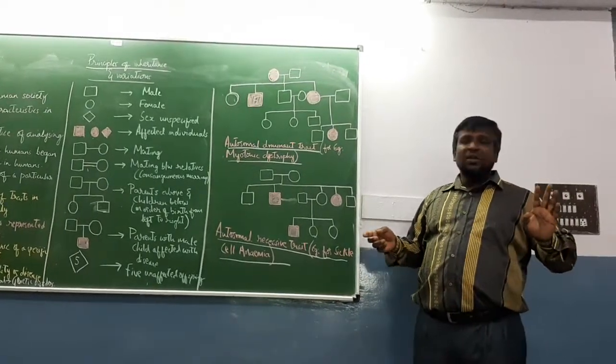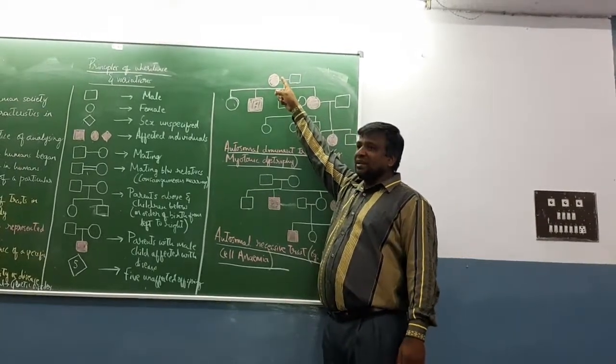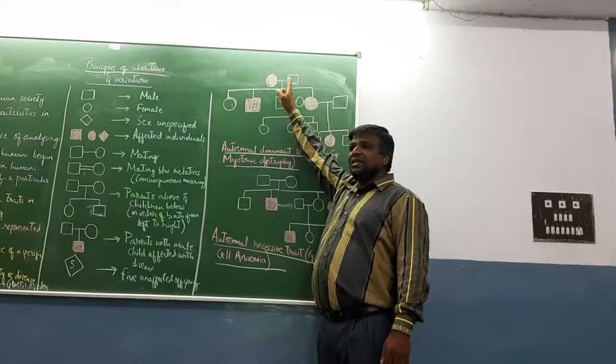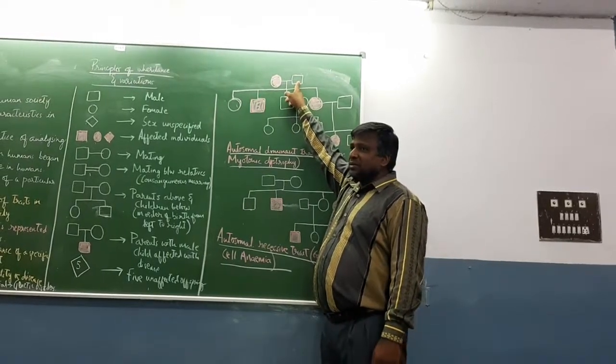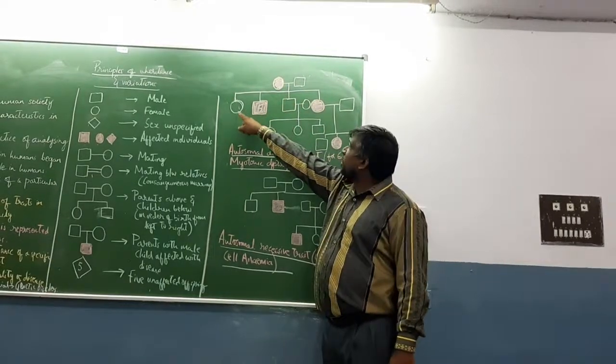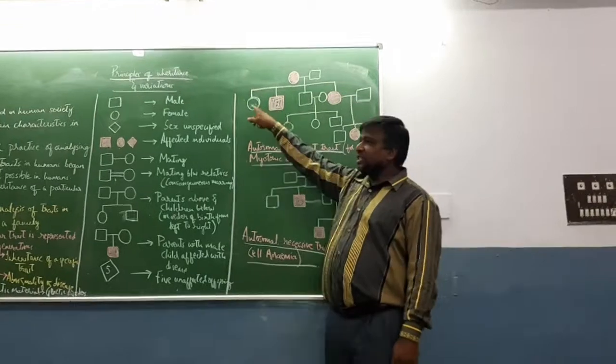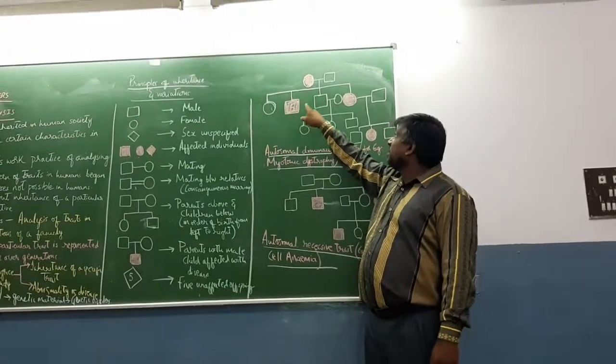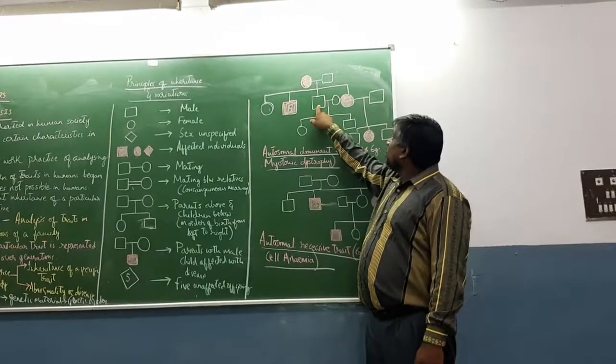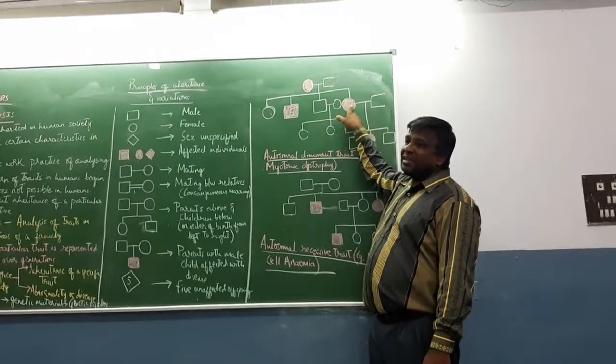The female is affected with this disease. Normal male. When they undergo mating, they have produced how many offspring? Four offspring. First is daughter, second is son - son is affected with disorder. Third, normal son. Fourth is an affected daughter.